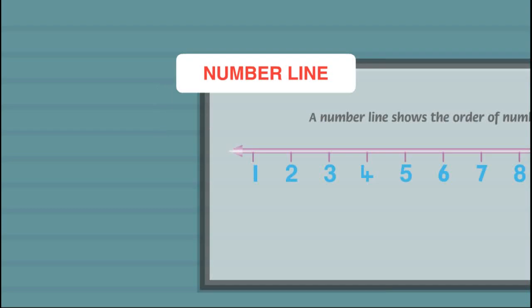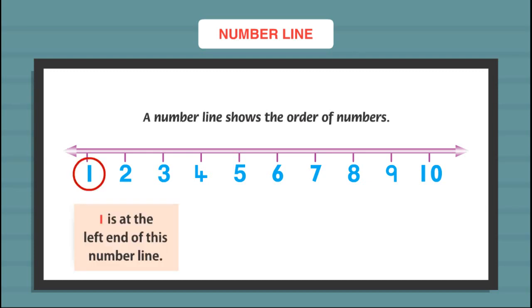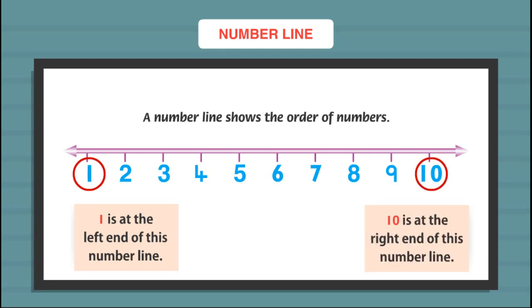Number line. A number line shows the order of numbers. 1 is at the left end of this number line. 10 is at the right end of this number line.